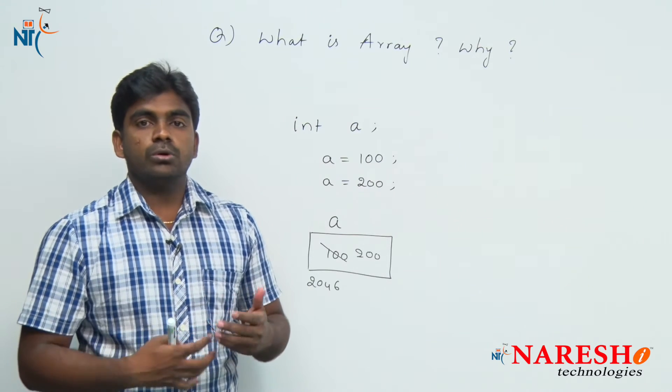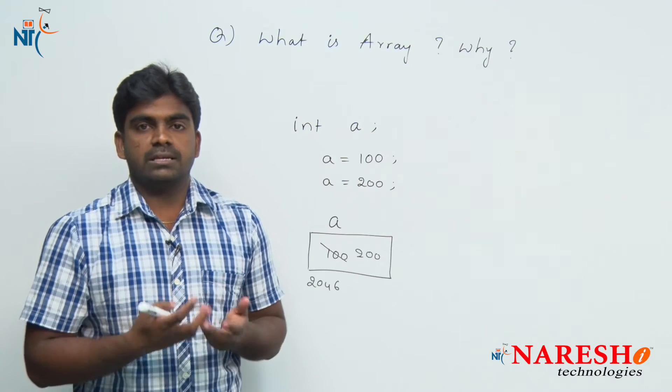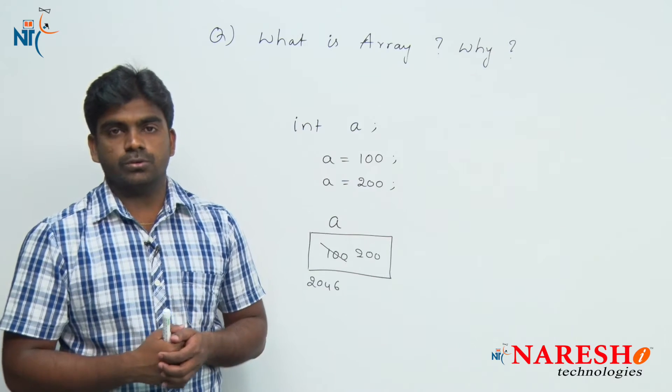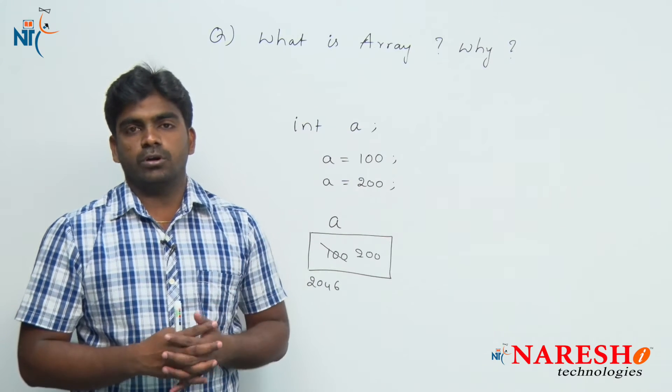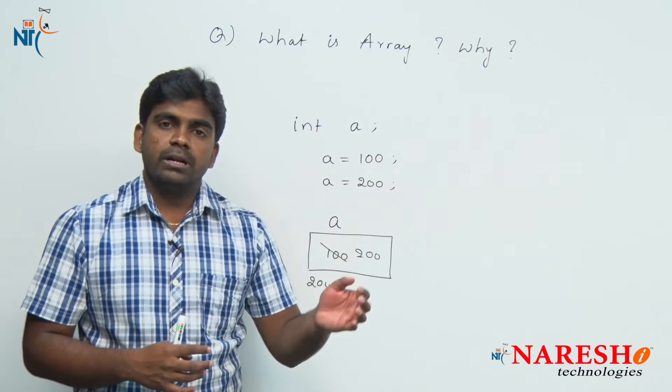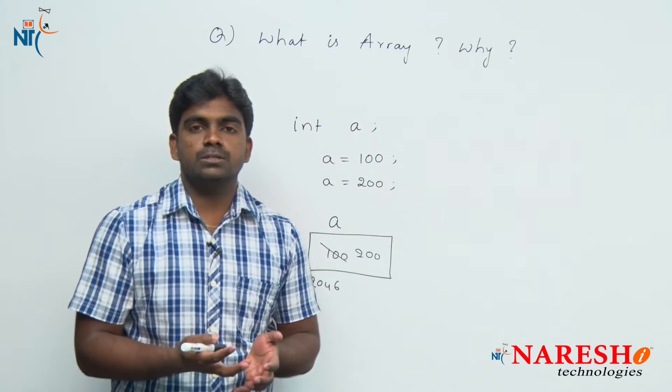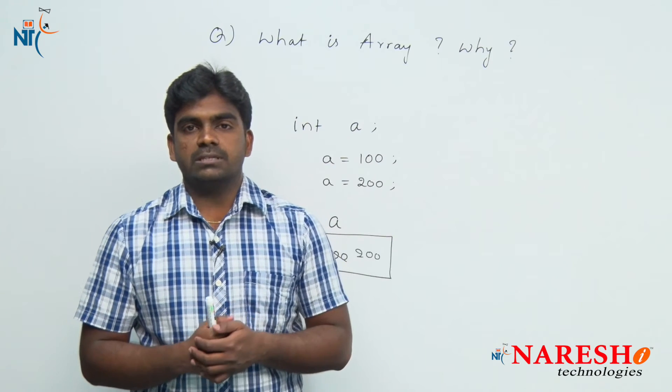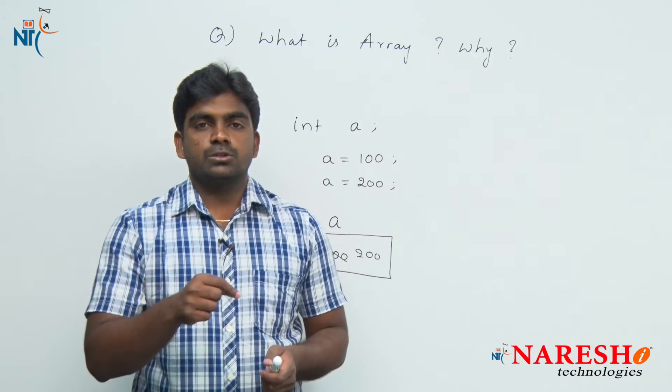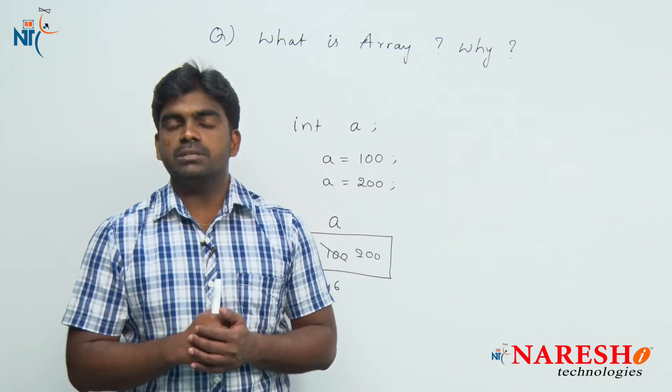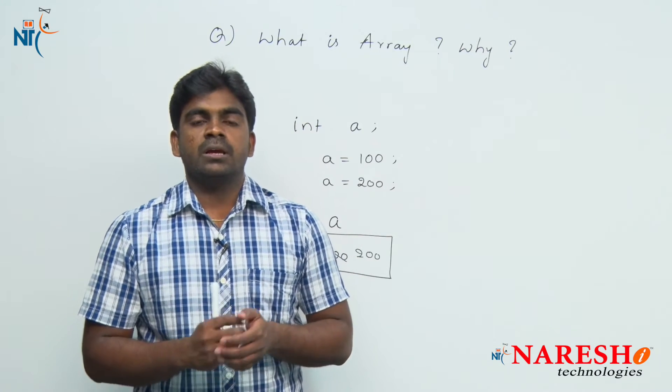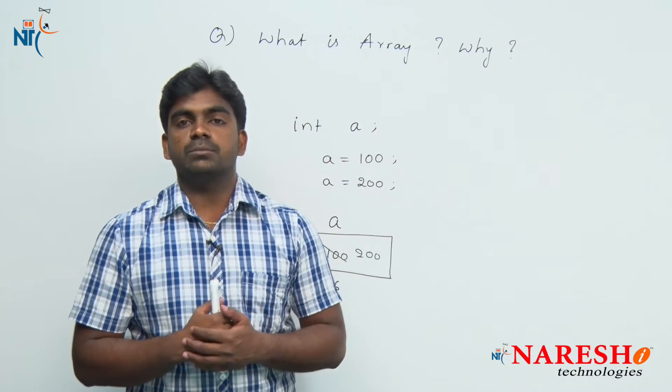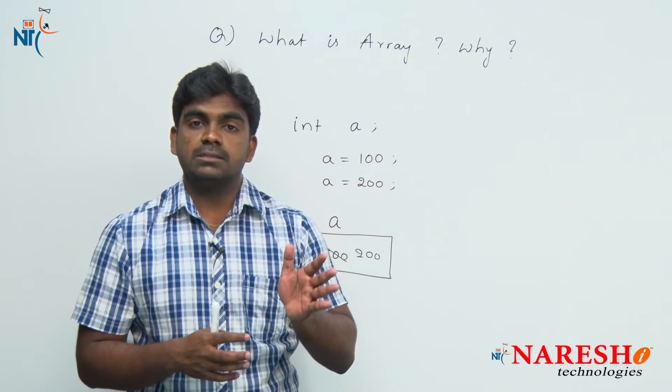But if you want to store more than one element at a time, for example, students' marks information, phone numbers, or account numbers. If you want to store 100 student marks, how to allocate the memory? Will you declare student 1, student 2, student 3 like that, 100 variables? Impossible, because declaration of 100 variables as well as working with 100 variables is a very complex task.